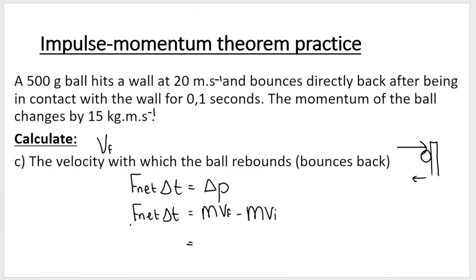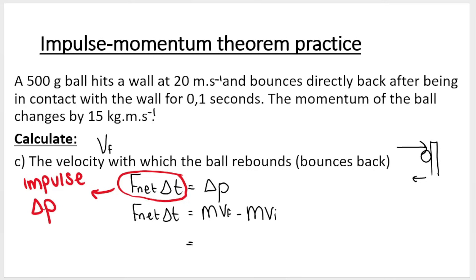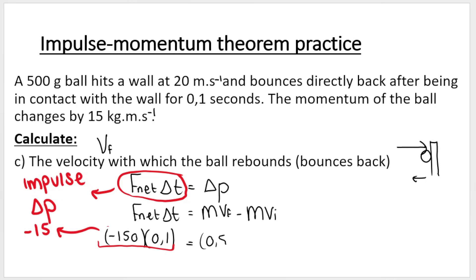Now I'm going to substitute in. We know the entire left-hand term is the impulse, which is also the change in momentum of the ball — which is negative 15. So either put negative 15 here, or note that F net is negative 150 and time is 0.1; either way this term equals negative 15. The mass of the ball is 0.5 kilograms — remember it must be in kilograms. VF is what you're looking for. Your initial velocity is positive 20 because it was initially going towards the wall, which is our positive direction.